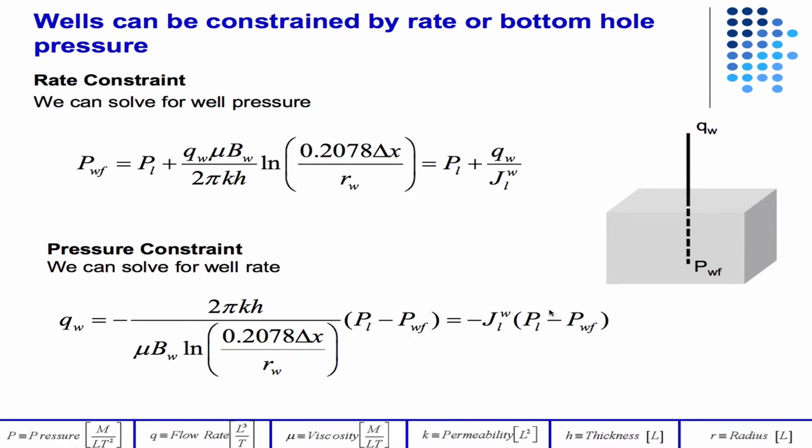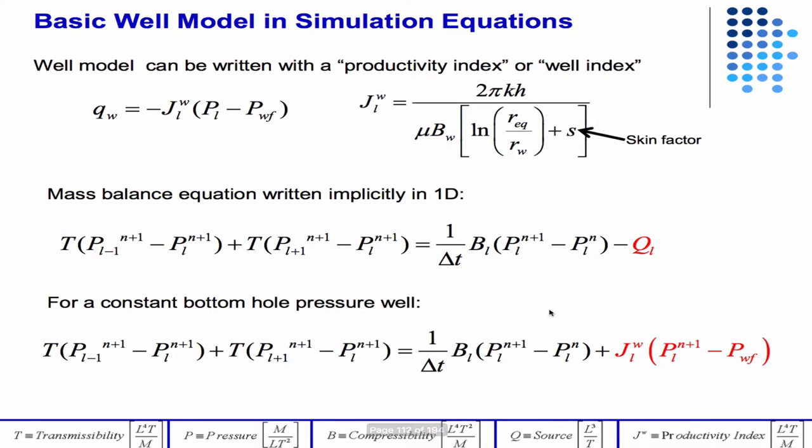So then if we, now that we have that 0.2 or 0.2078 delta X, we can plug it back into our equation, evaluating at REQ, and then we get the equation that we want. So the pressure at the well in terms of everything we know. And so then if we're solving for a rate constraint, or if we have a rate constrained well, we get something that looks like that on the right, and if we have a constant bottom hole pressure well, we get something that looks like this.